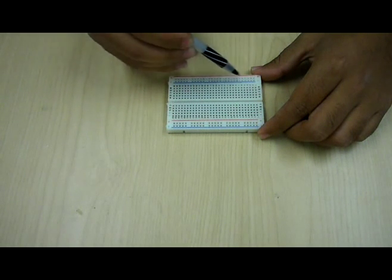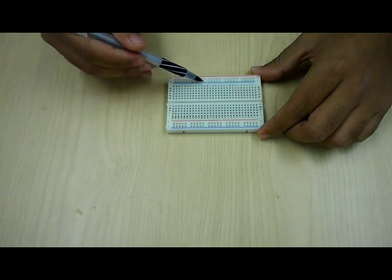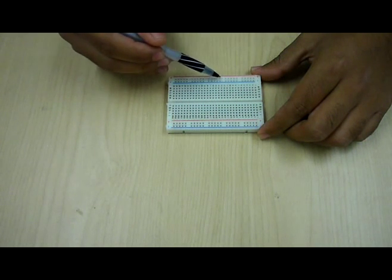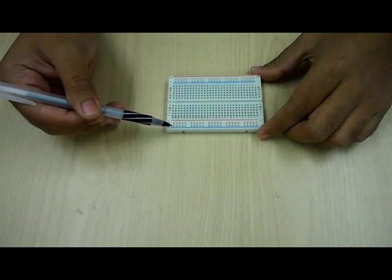They connect, this entire row is just one long connection and this is another long connection here. And it's the same for the other side.